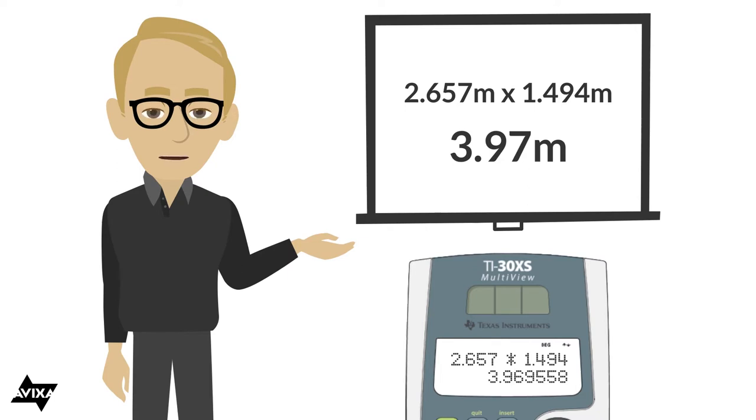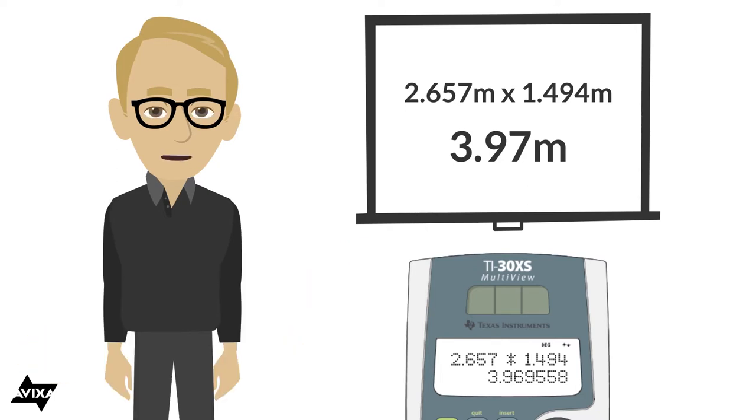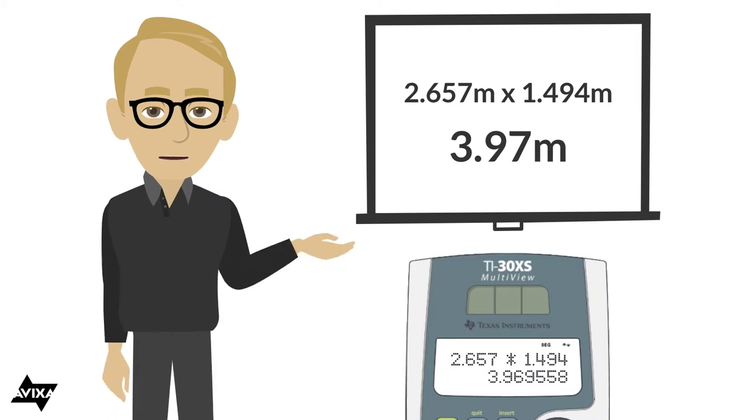So almost 4 square meters for the area of the screen. So that's how you would convert U.S. customary inches into square feet, so square inches to square feet. And in metric, millimeters, square millimeters into square meters.